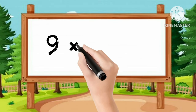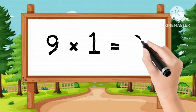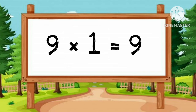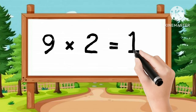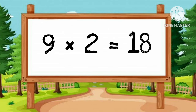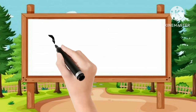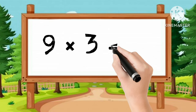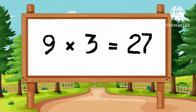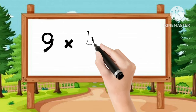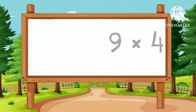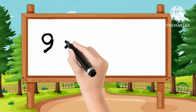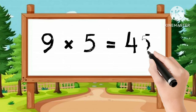Let's learn table of 9. 9-1s are 9. 9-2s are 18. 9-3s are 27. 9-5s are 20. 9-3s are 45.